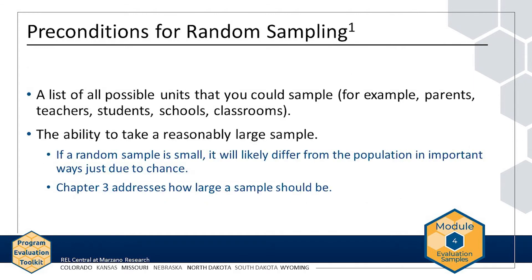To use random sampling, you must have a list of all possible units — for example, students enrolled in schools within a particular district — that you could sample. This list is called the sampling frame. If you do not have such a list, you will not be able to use random sampling. Generally speaking, random sampling is worthwhile if it is possible to take a reasonably large sample. If a random sample is small, it will likely differ from the population in important ways just due to chance. For example, if a district has 600 middle school students and you sample only 10, those 10 students will likely not represent the entire population with respect to characteristics like gender, race, ethnicity, socioeconomic status, and prior achievement. The differences would undermine the rationale for taking a random sample in the first place.